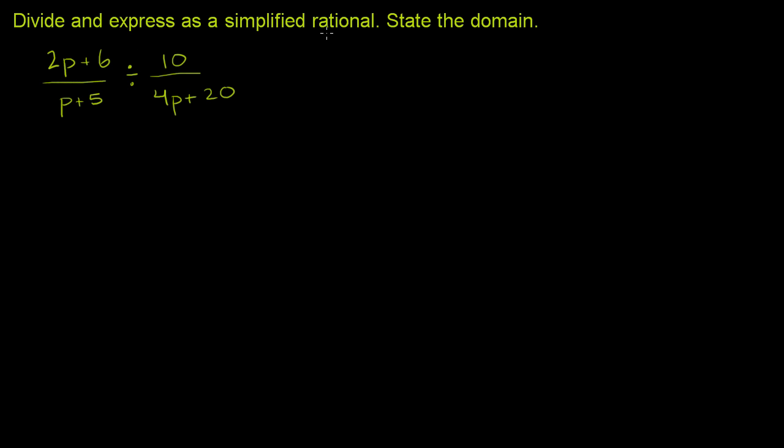Divide and express as a simplified rational. State the domain. So we start off with this expression. We actually have one rational expression divided by another rational expression. And like we've seen multiple times before, these rational expressions aren't defined when their denominators are equal to 0.